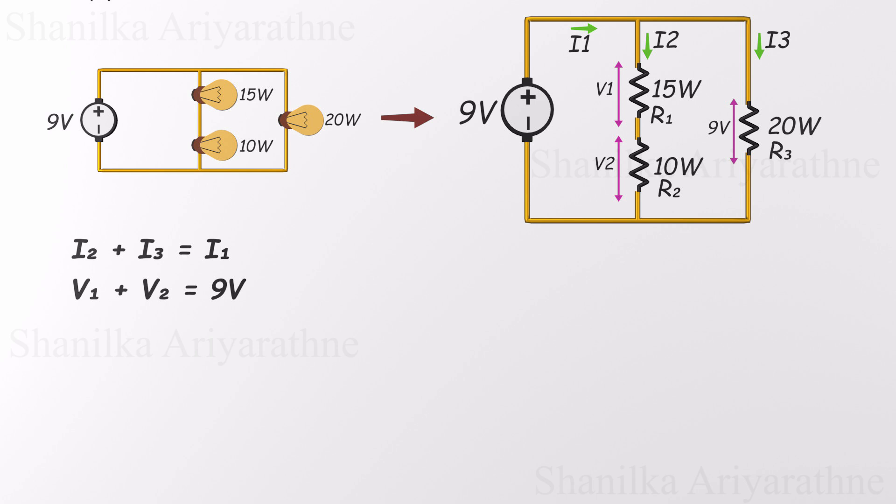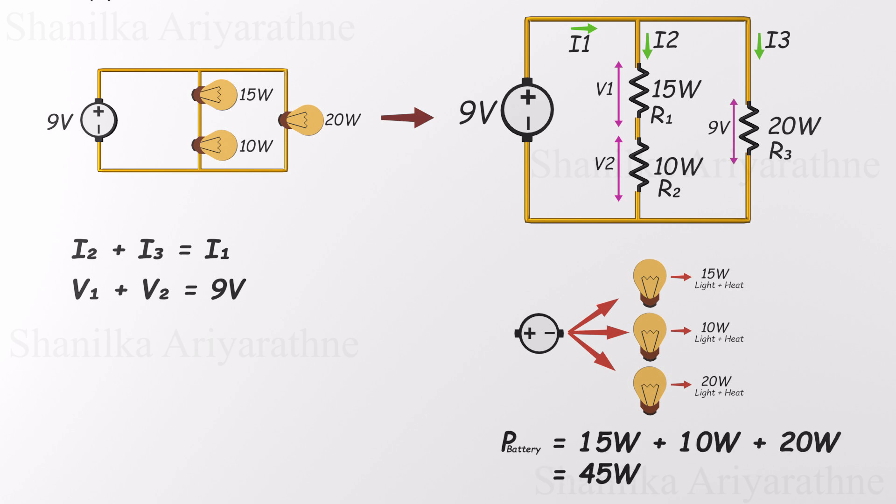Here's a key idea that brings the whole picture into focus. We're told how much power each light bulb consumes, but where does all that energy originate? The answer lies with the battery. It's the sole energy provider for the entire circuit. That means whatever power the bulbs are using has to come directly from the battery. So if the bulbs are consuming 15 watts, 10 watts, and 20 watts respectively, the total power consumption is 45 watts. The battery must be supplying 45 watts of power to keep everything running. In other words, it's pumping out 45 joules of energy every single second to keep those bulbs glowing.